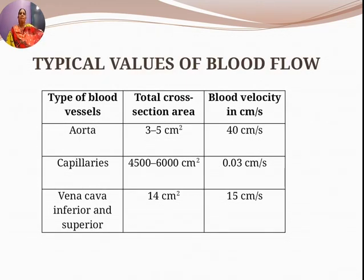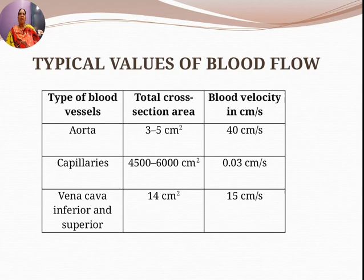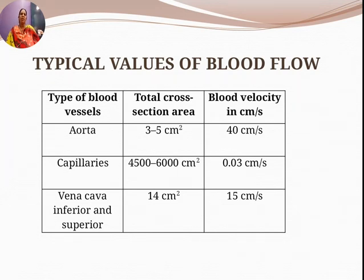The typical values of blood flow vary based on the type of blood vessel. In the aorta, the total cross section is 3 to 5 cm² and blood velocity is 40 cm/s. In the capillaries, the total cross-sectional area is 4500 to 6000 cm² and blood velocity is only 0.03 cm/s — much slower than in the aorta.